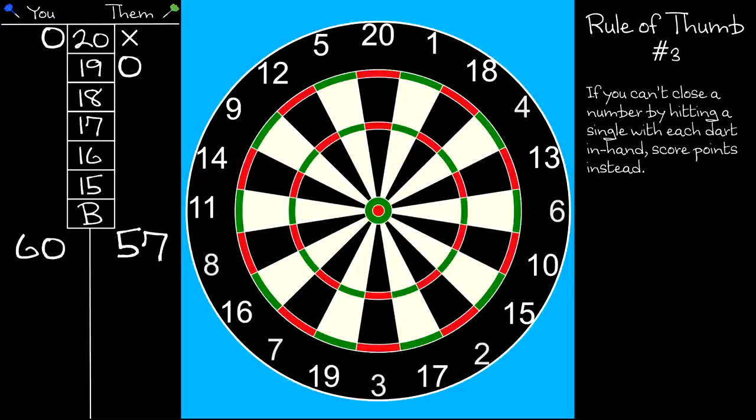To illustrate my third rule of thumb, let's suppose your opponent hit six 19s to leave the board looking like this. You're ahead on points, so ideally you'd like to close the 19. The wise thing to do is to throw three fat 19s. If you throw at the treble 19, your risk of slipping into the 7 or the 3 is greater than if you throw at the fat part of the number.